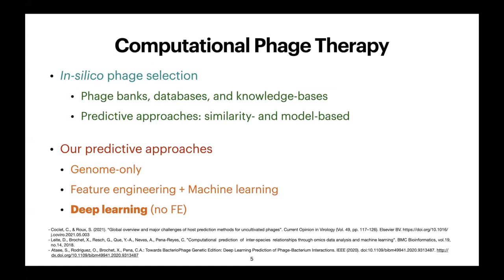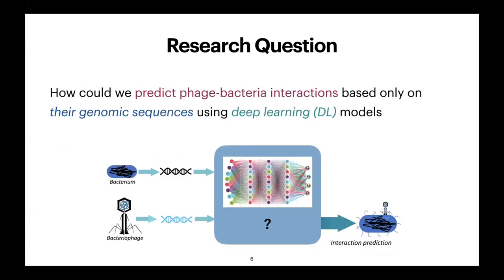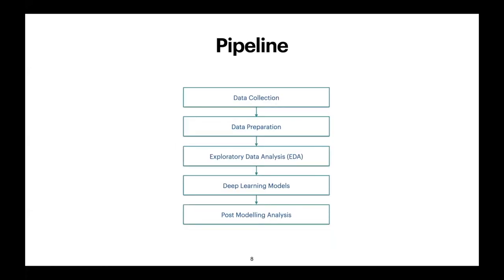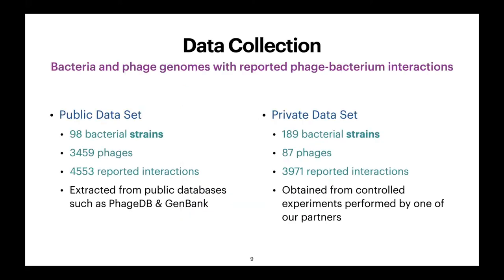Our research question is: how could we predict interactions between phages and bacteria based only on their genomic sequences using deep learning? For that we need data. The methodology is a relatively simple conceptual pipeline: collect data, prepare it based on exploratory data analysis, make decisions, apply the models, and analyze results. For data collection we use two sources — the first is what we call the public dataset, extracted from public databases such as PHIDBE and GenBank.